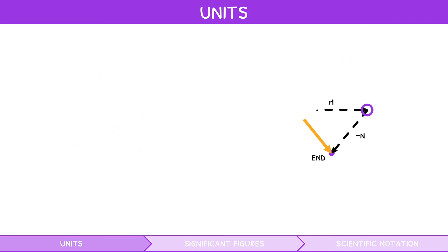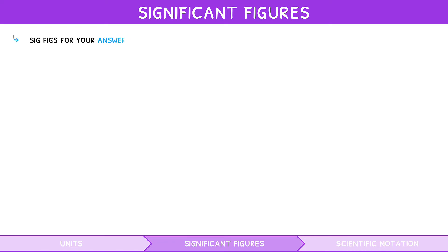Other than correct units, a correct answer must have the correct number of significant figures, often abbreviated to sig figs. As a rule, the number of sig figs for your answer should match the lowest number of sig figs used in the question. But how do you tell what this is?